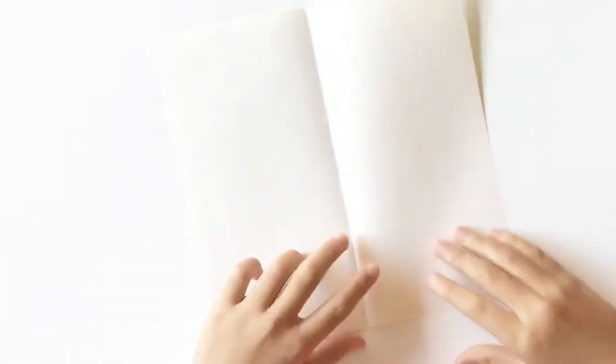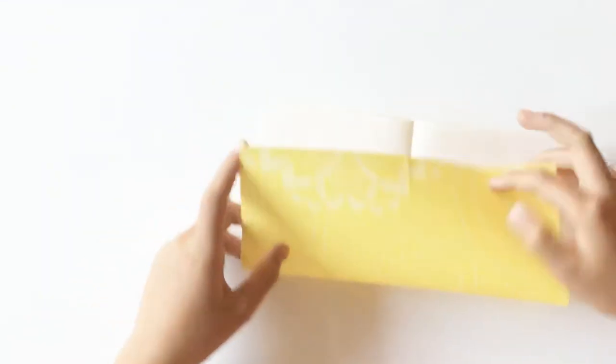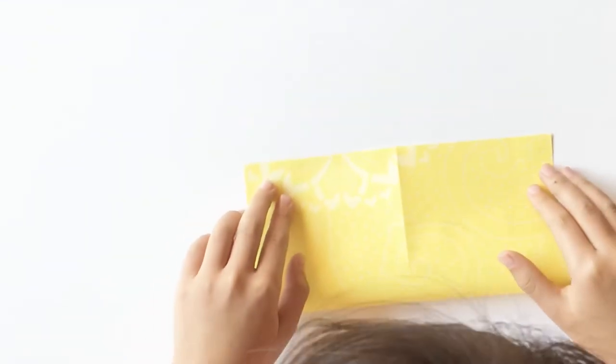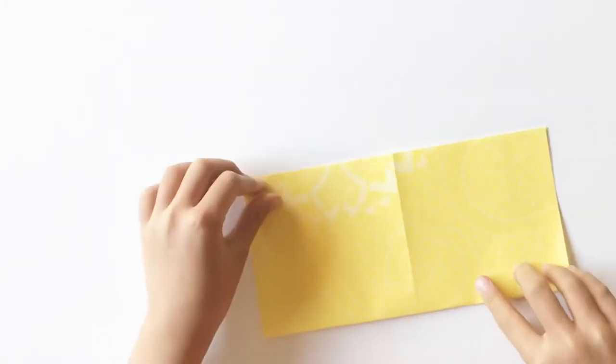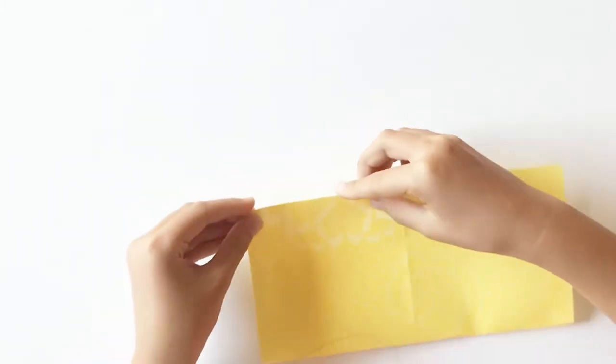When you're done, turn the origami paper so the line is in the middle and fold it again. Then unfold it.